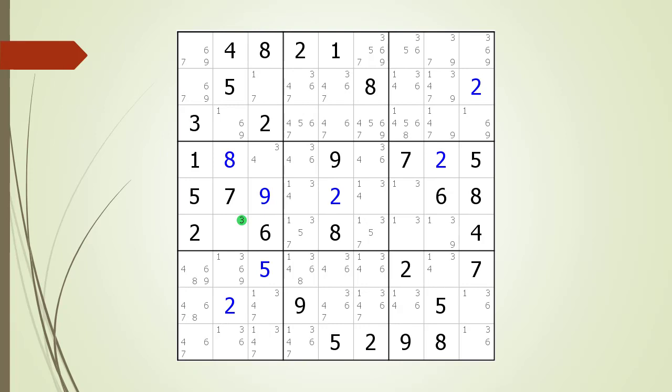We scan each row looking for a Naked Single. When we get to row six, column two, we find one. We choose the one remaining candidate as the value of the cell.